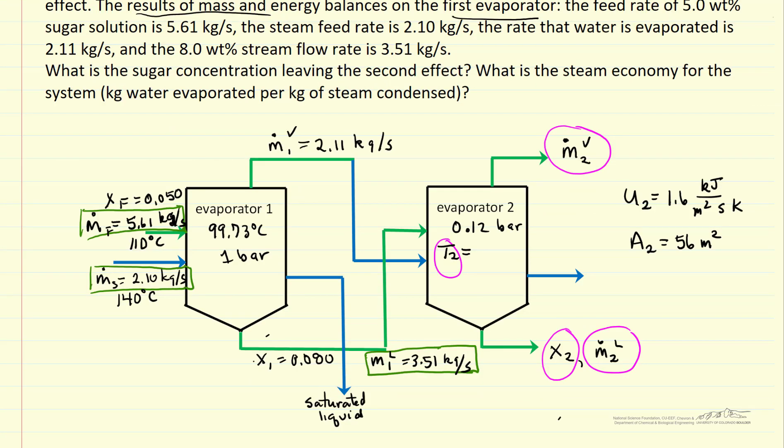So I've listed the values that we know. The unknowns are circled in the purple line, and the values calculated for the first evaporator, the values that are given from those calculations, are the green rectangles. And so now what we want to do first is determine this temperature T2.